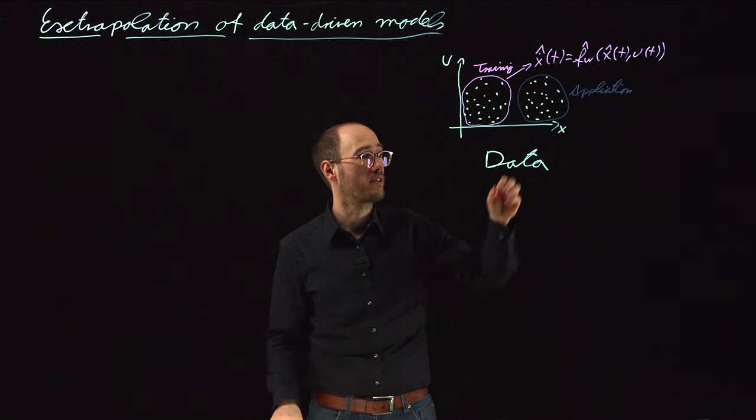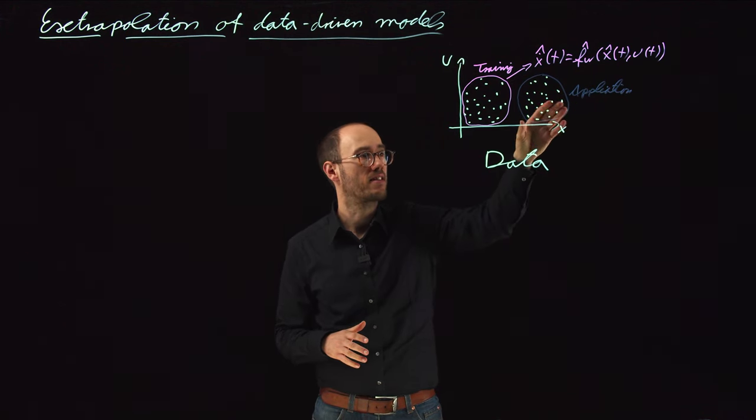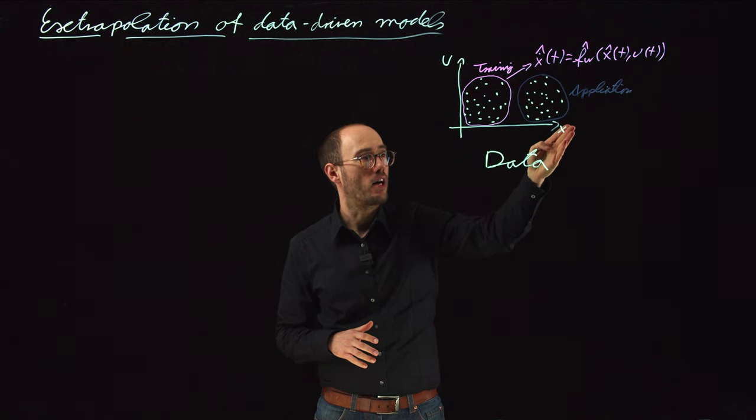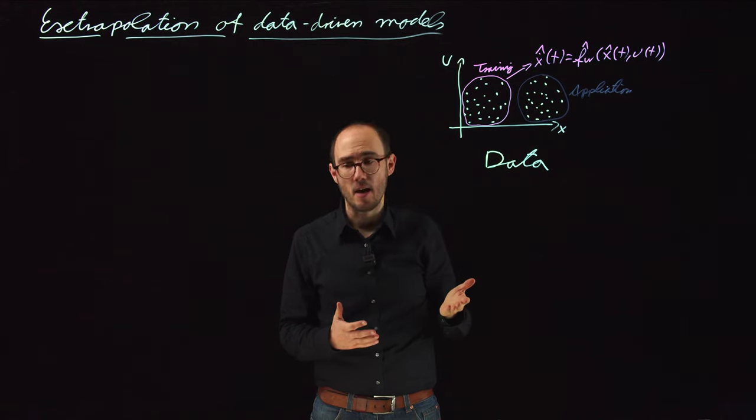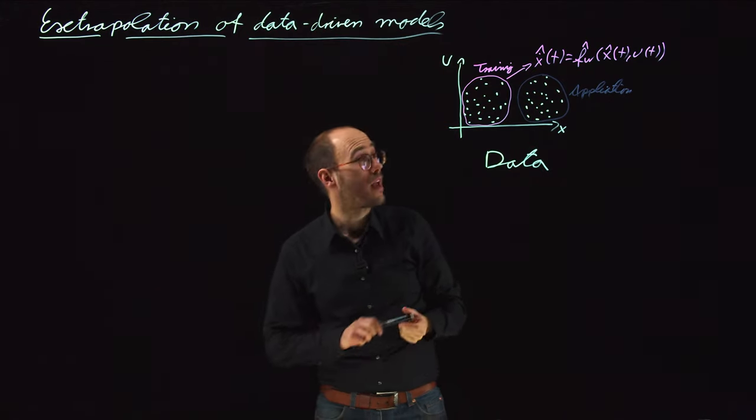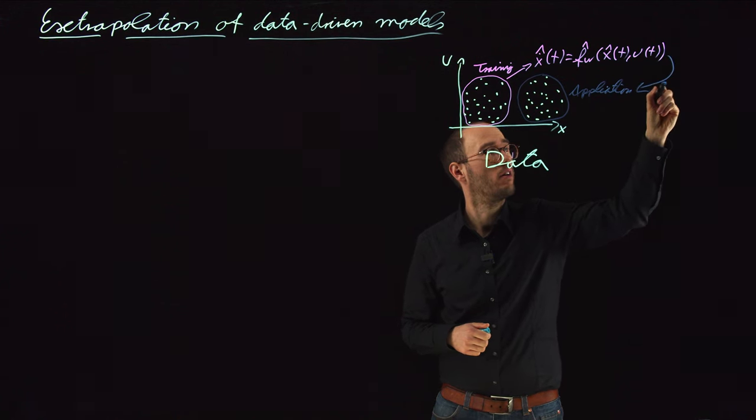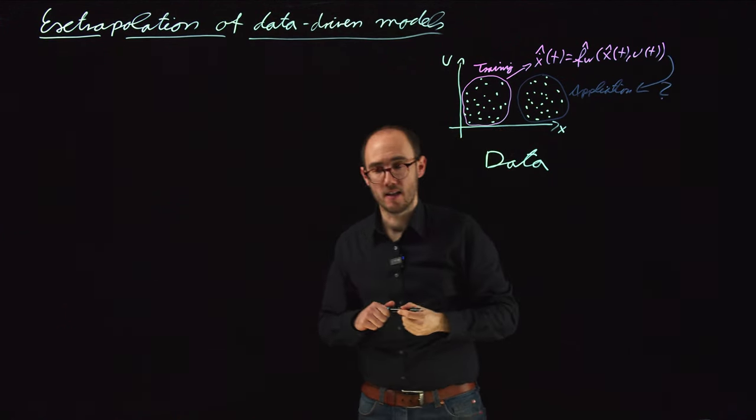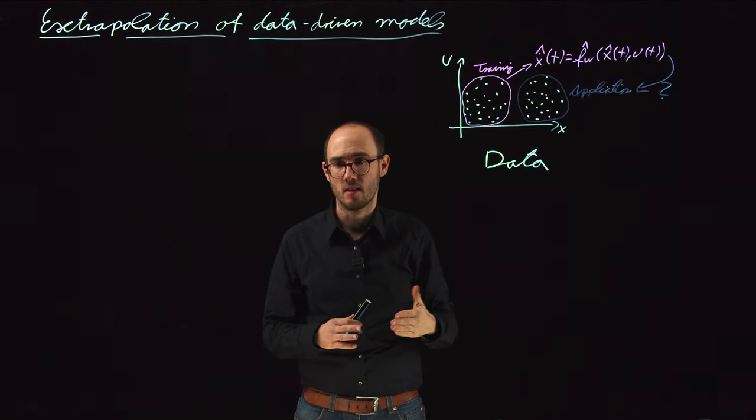And in this application phase, of course, we see that the states, especially the states, are much larger and different from the inputs. If that happens, the question is, what will our model do if we apply it to a situation which has not been seen during training?